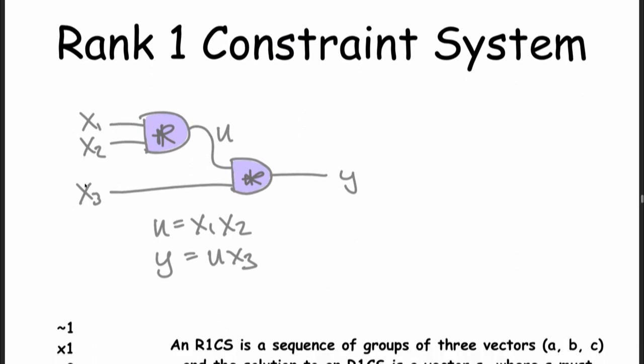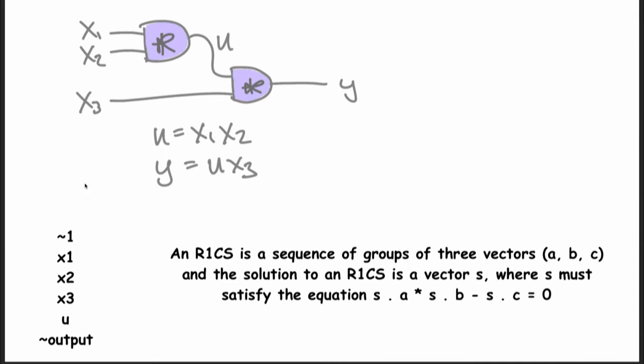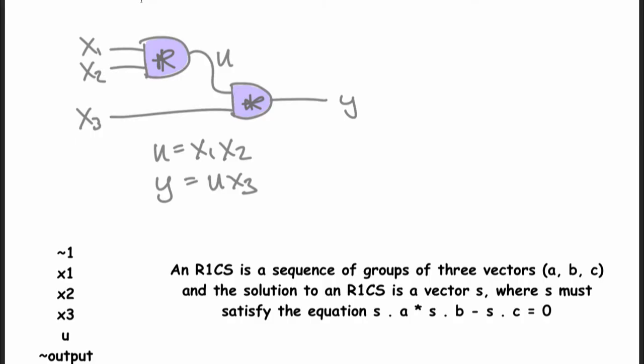A rank one constraint system is where we put these flattened versions of the equations into vectors. We have three vectors and a solution vector — the dot product means multiplying together entries in corresponding slots and then adding them all up. What S·A multiplied by S·B minus S·C is proving is that the two input wires in each case equal the output. A is the upper wire, B is the lower wire, and C is the output wire. This checks one at a time that the gates are consistent.